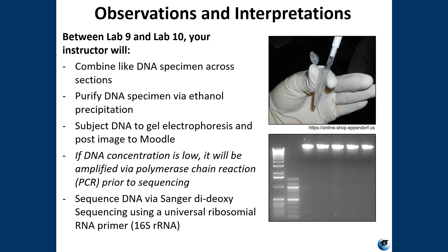Once the DNA is extracted, I'm going to do some of the work outside of class because we only have one sequencer, supplies are limited, and I need to combine DNA specimens across sections to increase the concentration of DNA. I will purify each specimen using a process called ethanol precipitation, which removes kinases, proteins, and other residual material to make the DNA nice and pure. Then I'll subject the DNA to gel electrophoresis and put that image on Moodle. You'll see DNA bands and a marker ladder, and from the gel image you'll be able to tell if your DNA was concentrated, pure, or present at all.